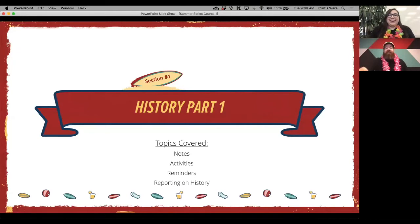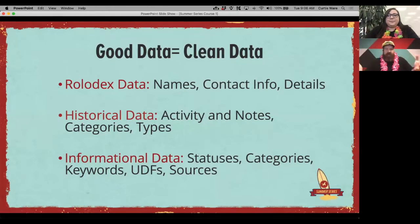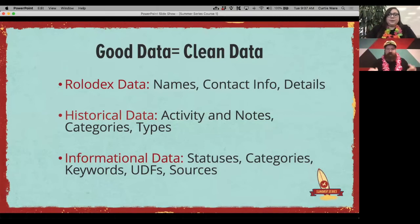Starting in section one, we're talking about data — good data equals clean data. There are really three types of data: your rolodex data, your historical data, and your information data. Today in course one we're focusing on historical data, and tomorrow we'll focus on informational data.